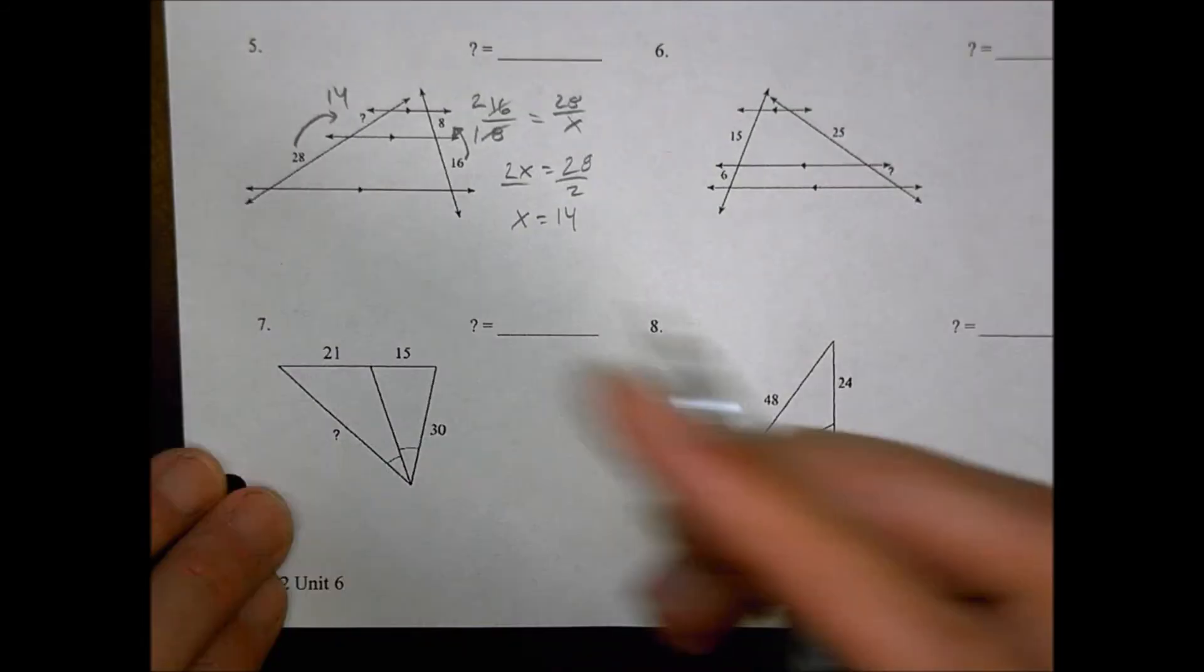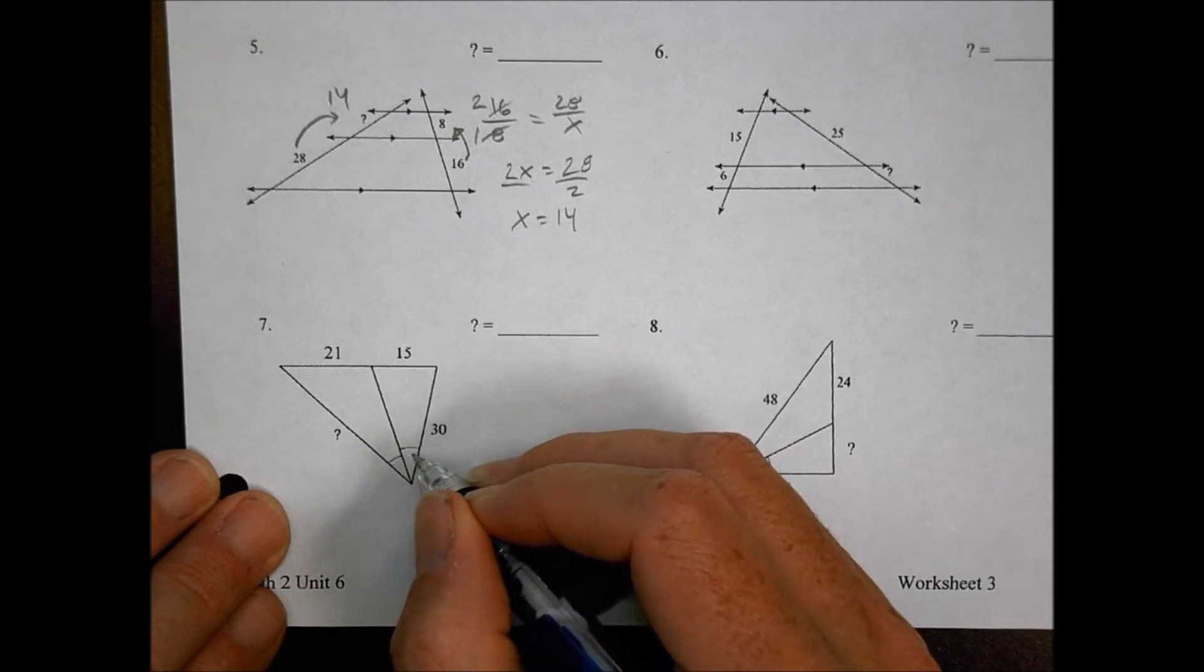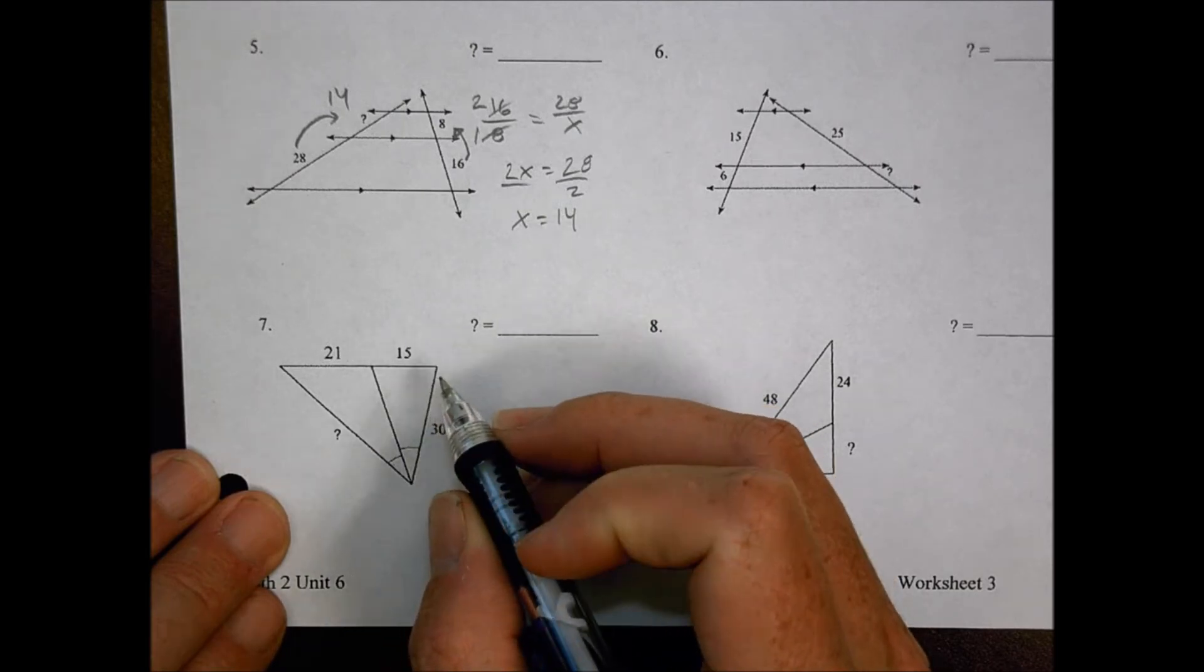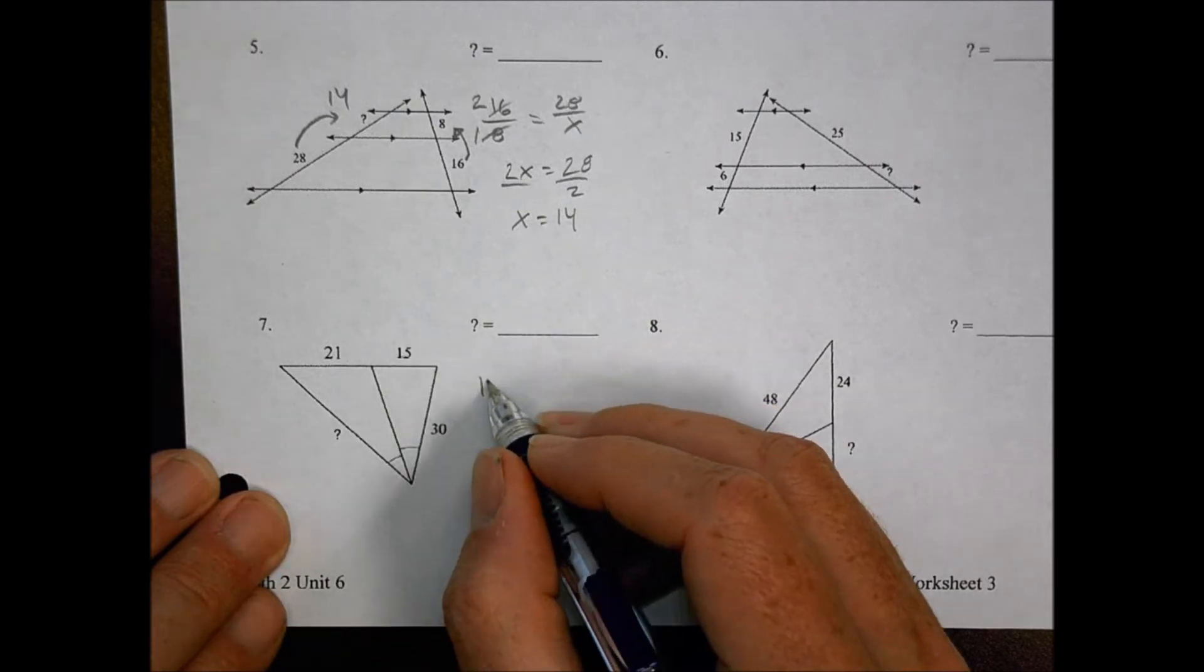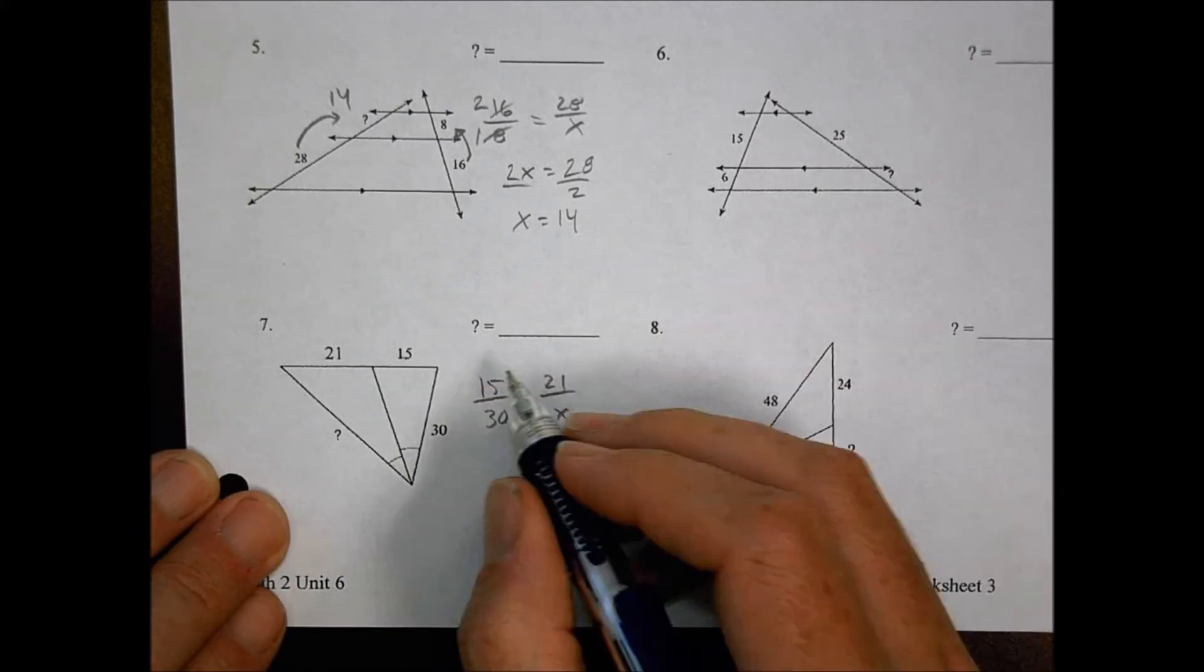Looking at number 7. For number 7, we have these angles are supposed to be the same, so we have angle measurements of the same there. And so what we're going to say is that that side, 15, goes to the 30, which is the same as the 21 going to the I don't know.